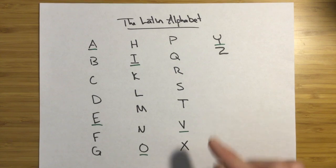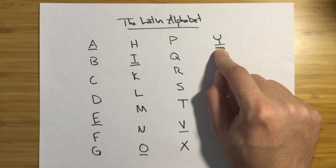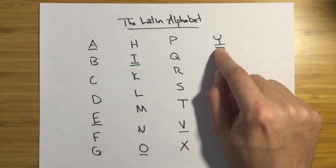X makes a X sound. Y was probably the Greek sound. Well, it was the Greek sound. Y. It only occurs really in Greek loan words in Latin.